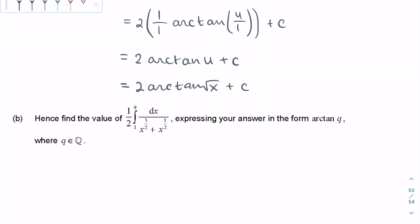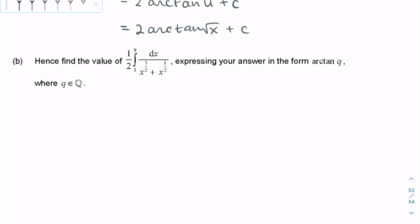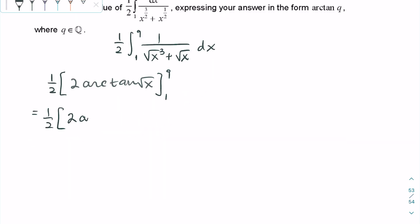Part B asks us to find the value of this definite integral and express it in the form arctan q. This integral is very similar to what we found in Part A, so we can simply substitute the upper and lower boundaries and subtract the two values.